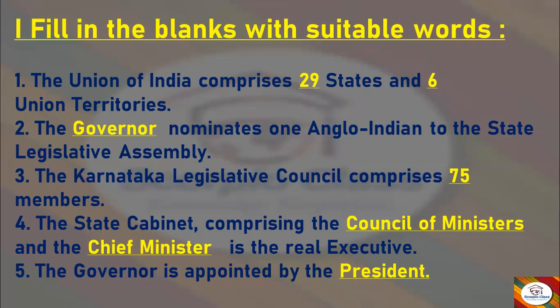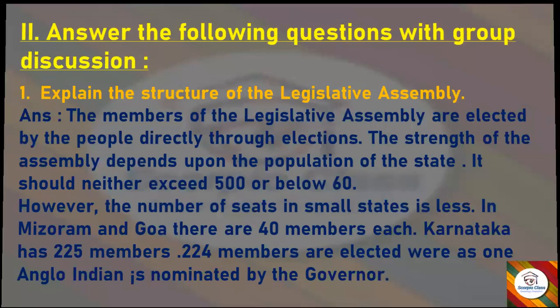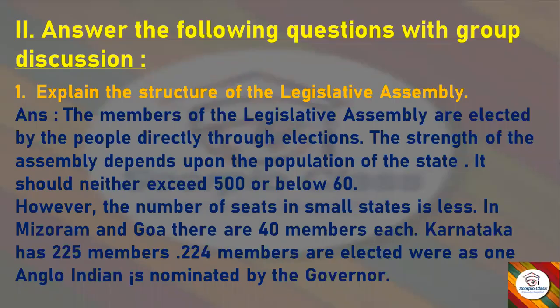Now let's move to the second section: Question and Answers. First question: Explain the structure of the legislative assembly. The members of the legislative assembly are elected by the people directly through elections. The strength of the assembly depends upon the population of the state — it should neither exceed 500 nor be below 60. However, the number of seats in small states is less. In Mizoram and Goa there are 40 members each. Karnataka has 225 members; 224 are elected whereas one Anglo-Indian is nominated by the governor.